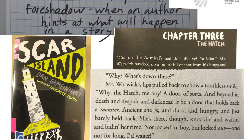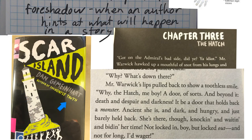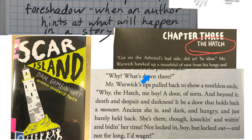So I just read this book called Scar Island here. It's about this boy, Jonathan, who is taken prisoner on this island. In the beginning, or towards the beginning, there's this chapter called The Hatch. In this chapter, they see these stairs, and Jonathan's like, what's down there? And this guy says, why, The Hatch, my boy, a door of sorts. And beyond it, death and despair and darkness, it be a door that holds back a monster. So this chapter is hinting that The Hatch is something that's going to be coming up in the story. They don't go down there right now, but it's foreshadowing that that has something important to do with the story. Almost all good authors foreshadow what's going to be coming up in the story.